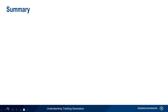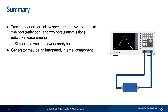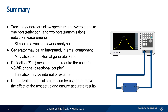Let's end with a brief summary. Tracking generators enable spectrum analyzers to make both one-port (reflection) and two-port (transmission) measurements, similar to the functionality found in vector network analyzers or VNAs. The tracking generator may be an integrated internal component of a spectrum analyzer, or it may be an external signal generator configured and controlled over LAN or GPIB. When making reflection or S11 measurements, a VISWAR bridge or directional coupler is needed, and these may be integrated or external. In all cases, normalization and calibration remove the effect of cables and other test setup elements to ensure more accurate results, and measurements are always relative to a normalized trace.